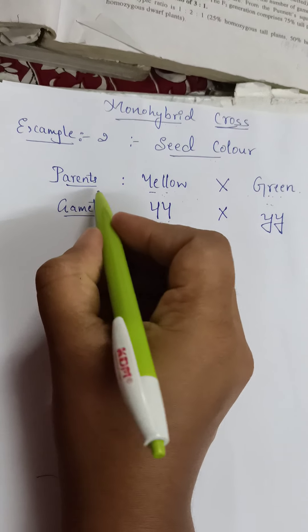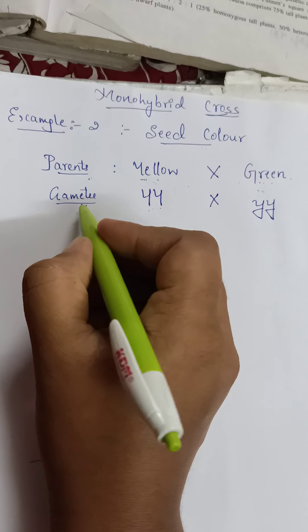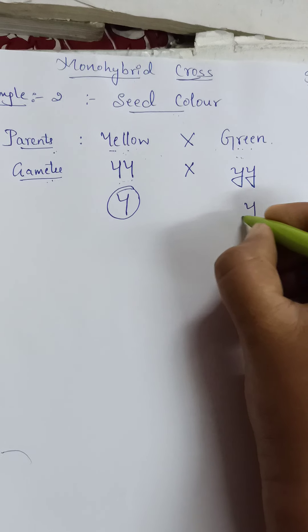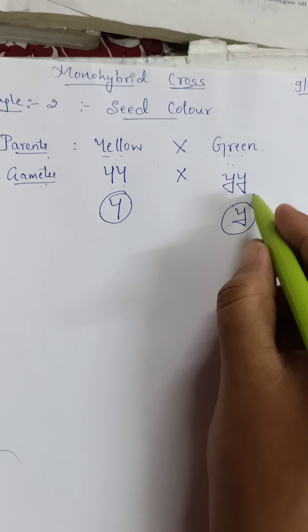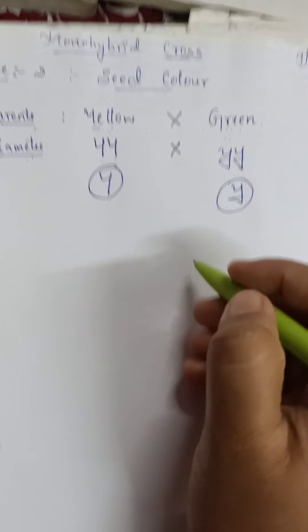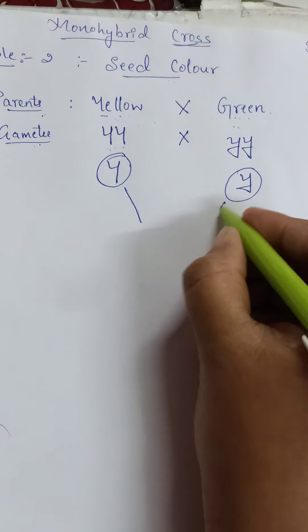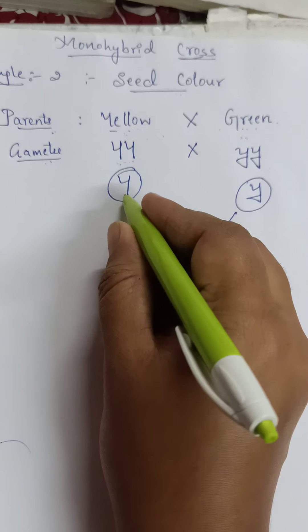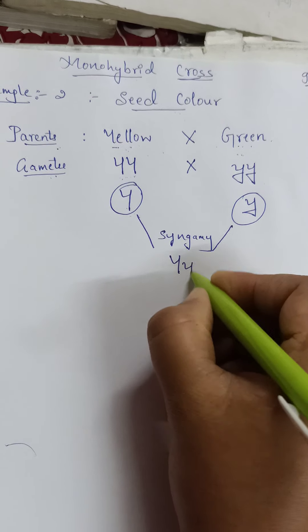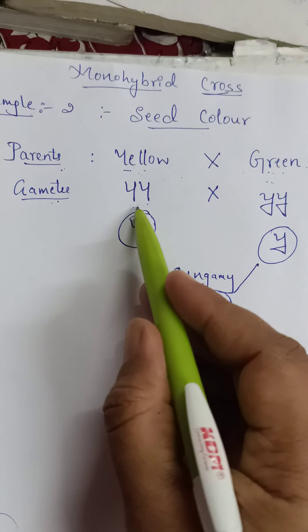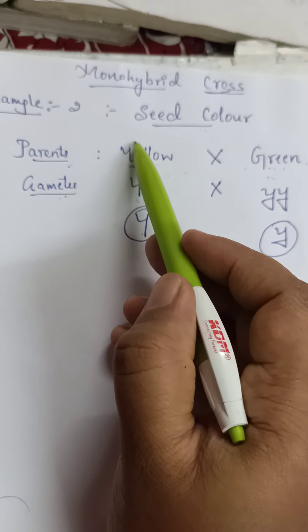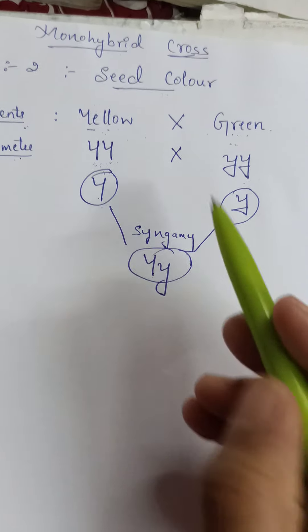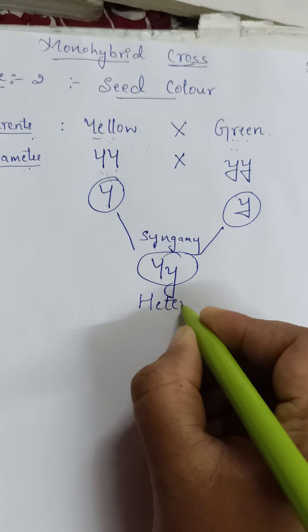You have to mention each step — not simply crossing over. You have to mention the parents and gametes. Then we take one capital Y and one small y and join them. Make sure capital and small letters appear differently. This condition — capital Y and small y — is called heterozygous. The homozygous yellow parent is YY and homozygous green is yy.